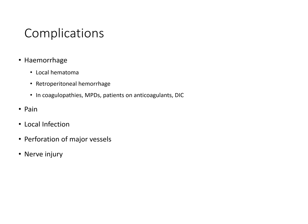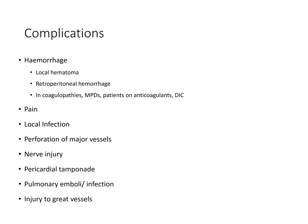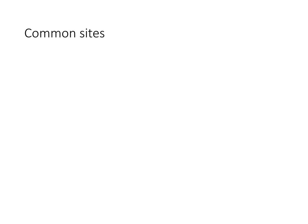Nerve injury, the most common being the gluteal nerves, can occur during the procedure. Pericardial tamponade, pulmonary embolism, pulmonary infarction, and injury to the great vessels can occur during sternal aspiration. Common sites for bone marrow aspiration and biopsy include the iliac bone, sternum, and tibia.